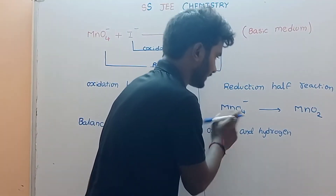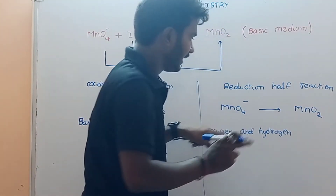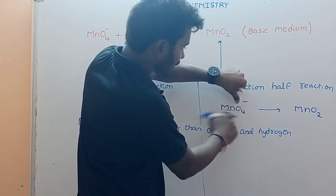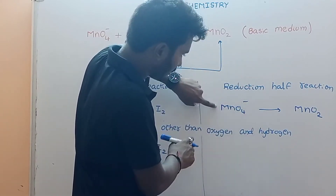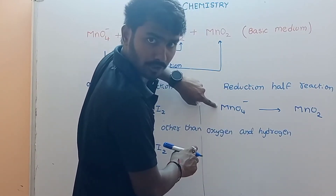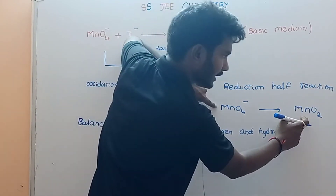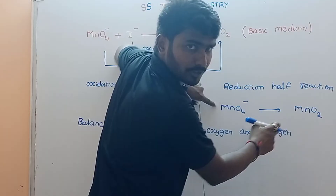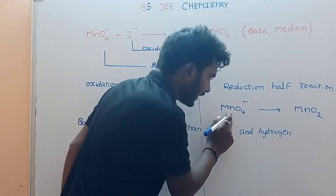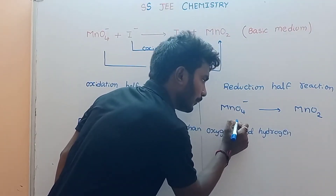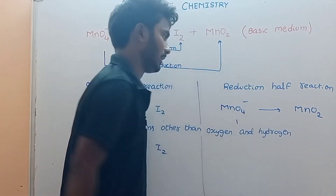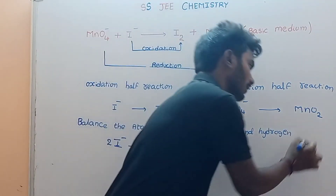Next, MnO4 minus. In this case, oxygen, hydrogen, carbon, and hydrogen are Mn. Where is Mn? Balance the Mn atoms on both sides.